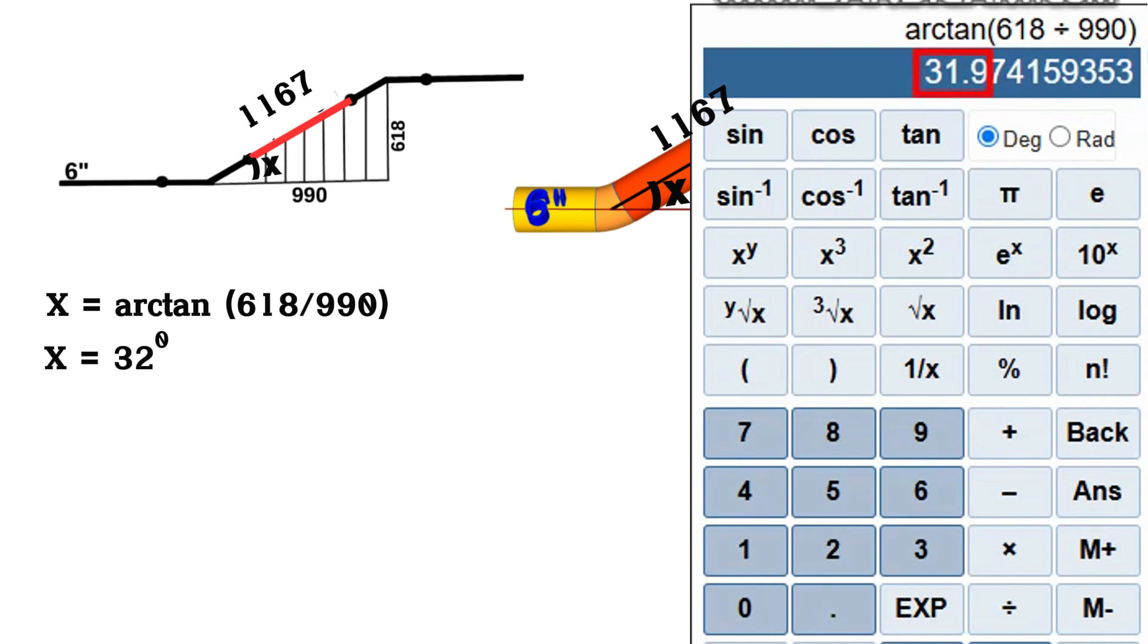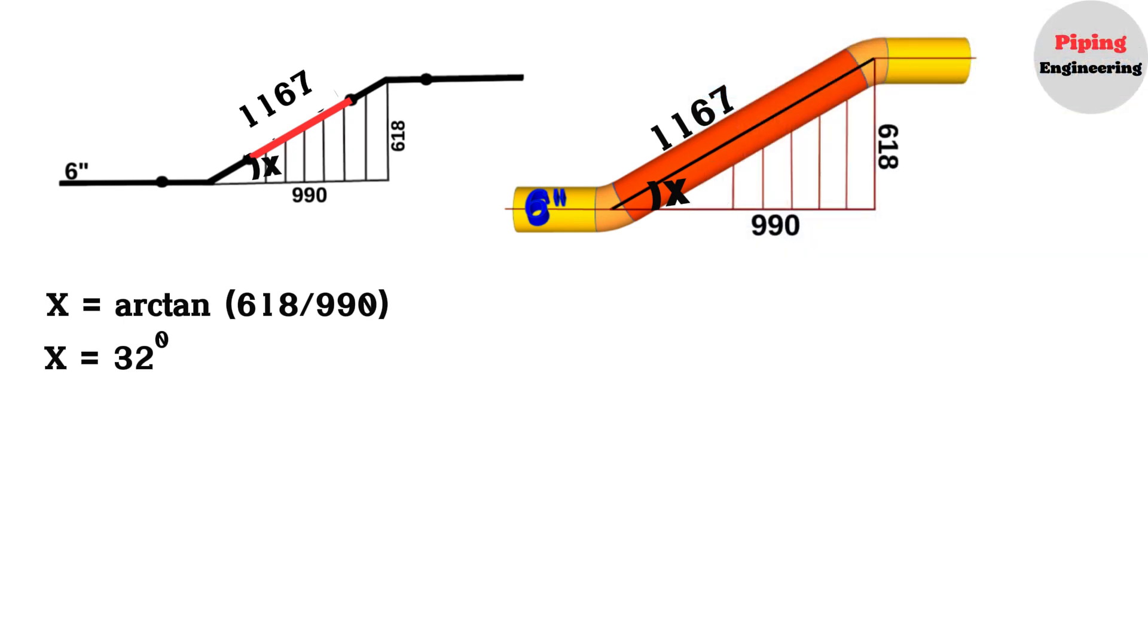So, we calculated and found that the cutting angle of these elbows is 32 degrees on the 6-inch pipeline. Now we should find the length of the 6-inch, 32-degree elbow.